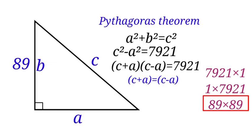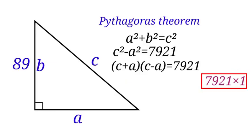For the third one, 89 times 89, C plus A here equals to 89, C minus A equals to 89. They are not equal. C plus A is not equal to C minus A. This does not satisfy our condition. We will be using the first condition, which is 7,921 times 1.